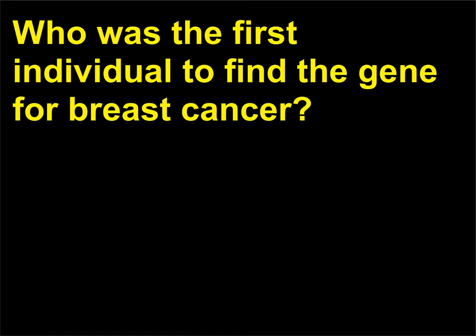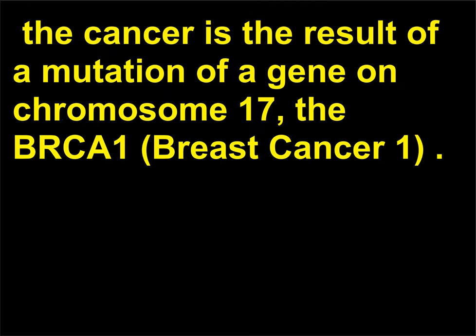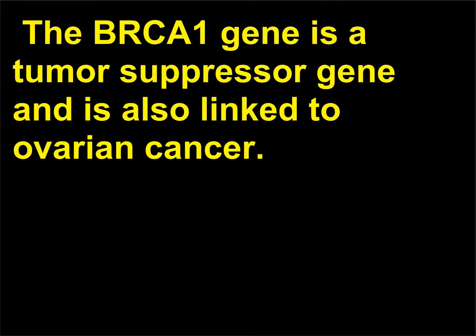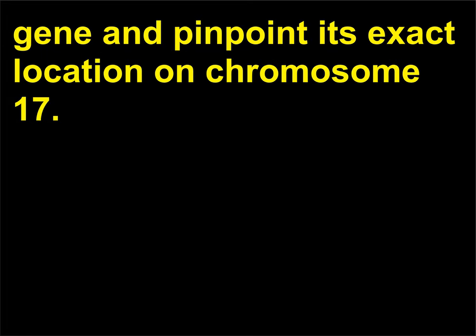Who was the first individual to find the gene for breast cancer? Mary Claire King, 1946, determined that in 5-10% of those women with breast cancer, the cancer is the result of a mutation of a gene on chromosome 17, the BRCA1, breast cancer 1. The BRCA1 gene is a tumor suppressor gene and is also linked to ovarian cancer. Subsequently, other researchers were able to clone the gene and pinpoint its exact location on chromosome 17.